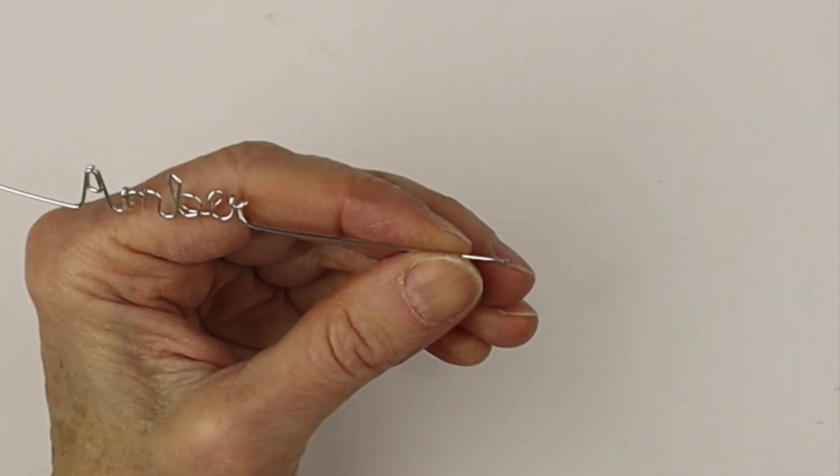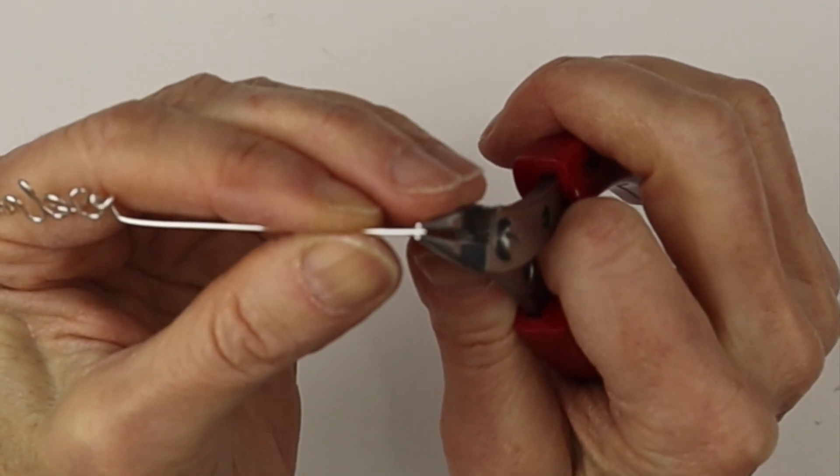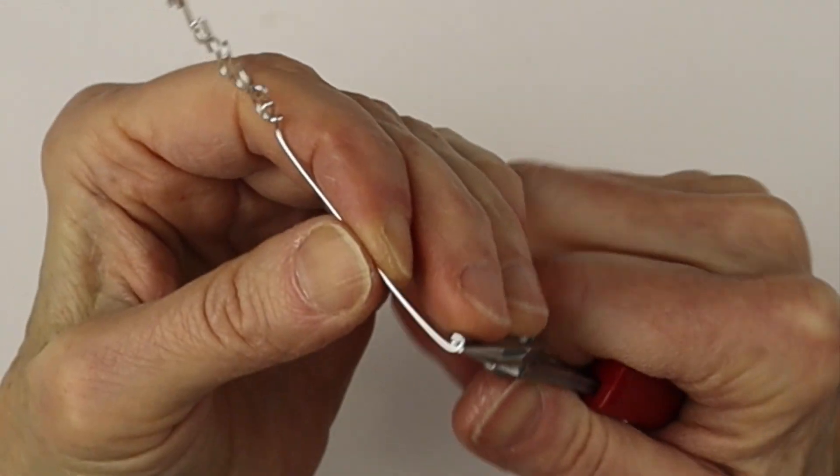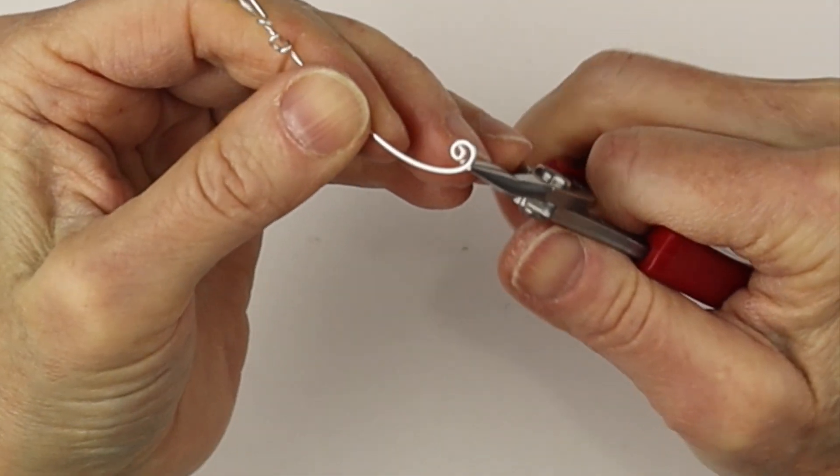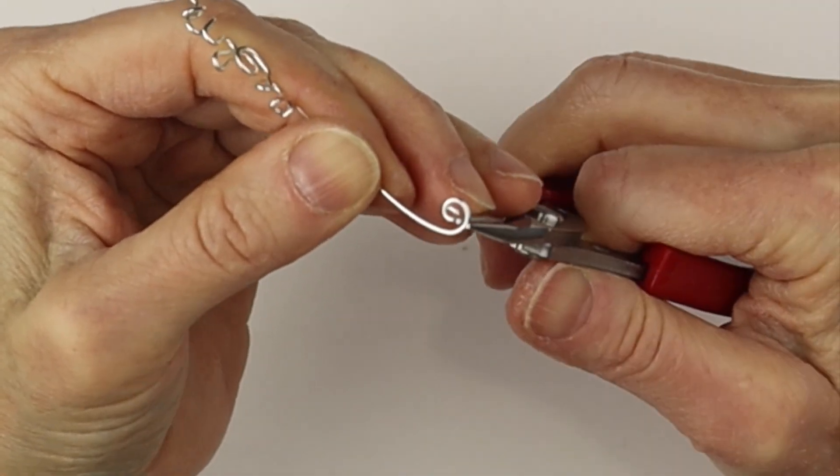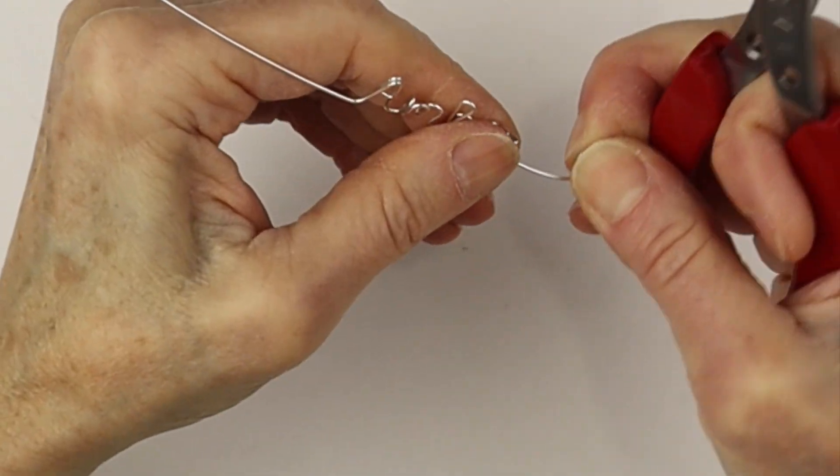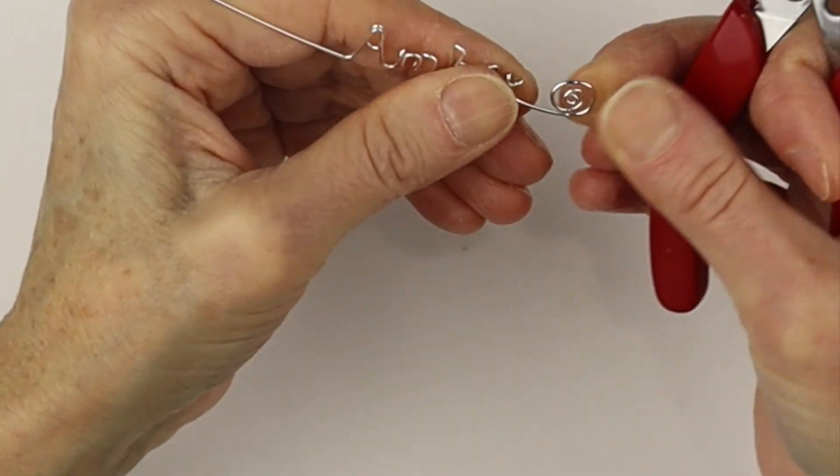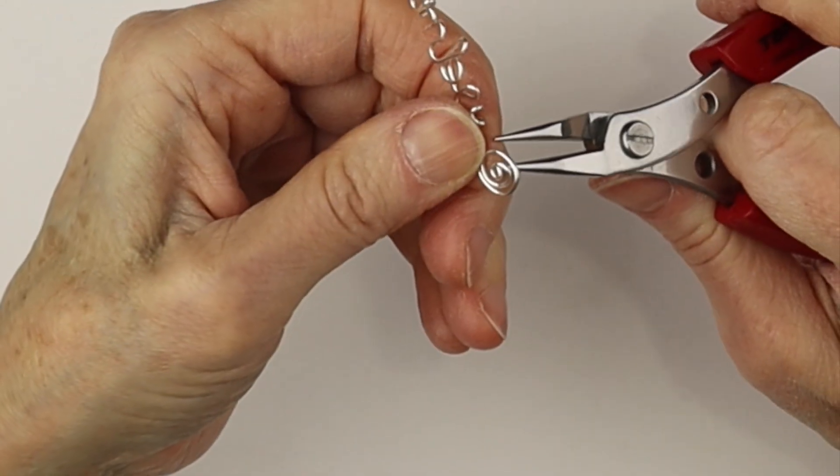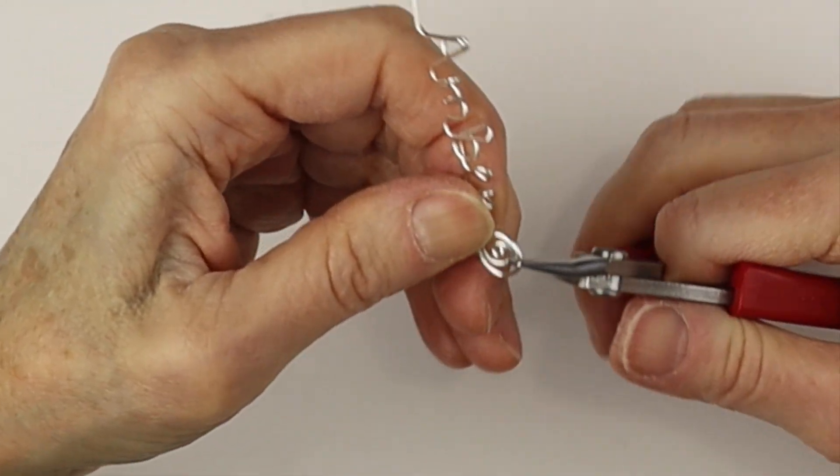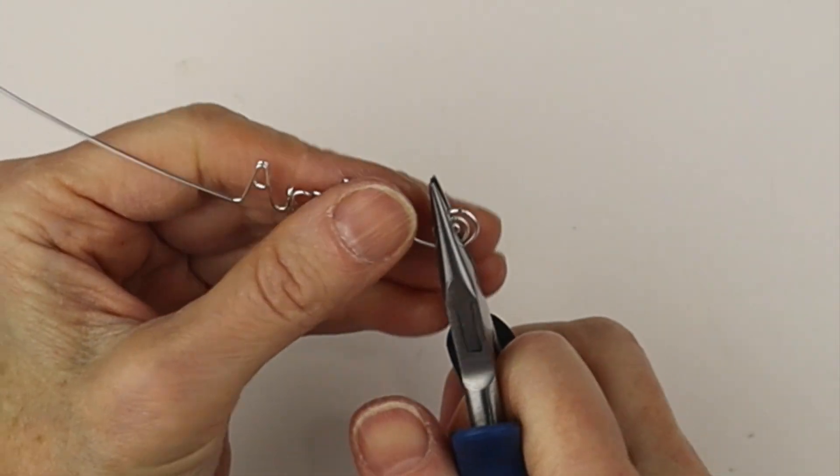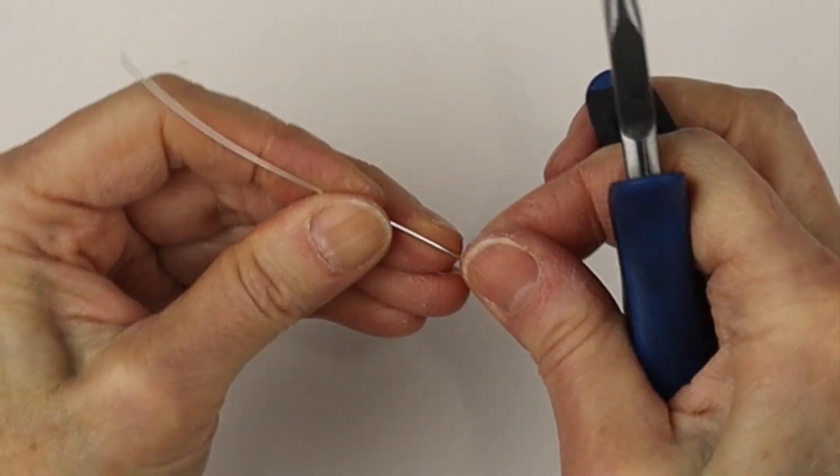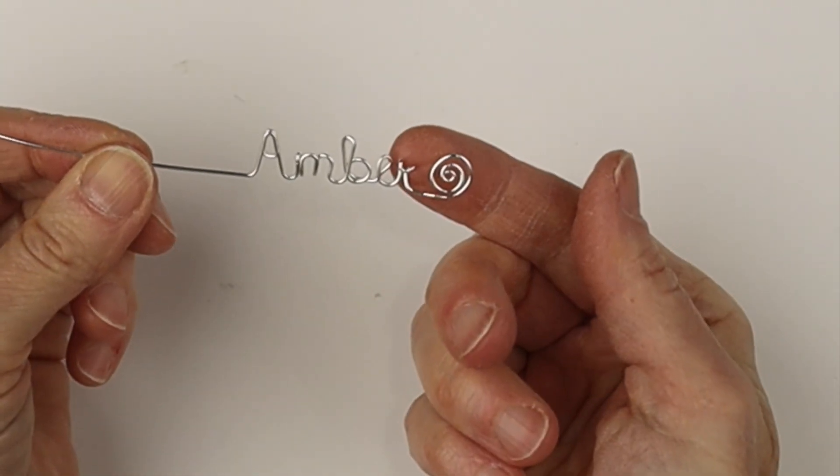And then I'm going to curve the end into a little loop and bring it around to make a spiral. So just work it in to make the spiral. Bring it in like that and then you can hold it with your thumb and finger to wind it right in to make the spiral a little bit bigger. You can adjust the wires so they're evenly spaced. Press it down with the flat pliers. And there's the name with a little spiral.